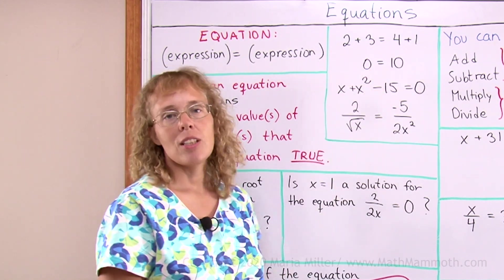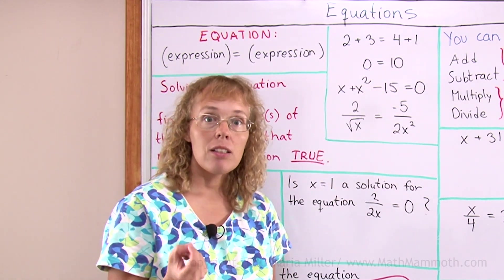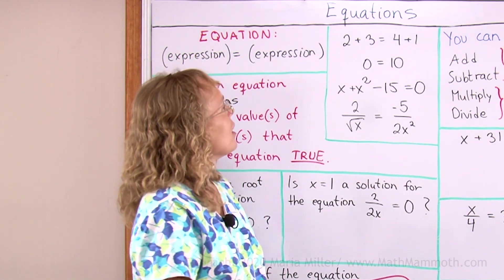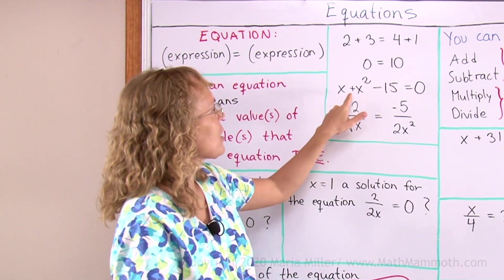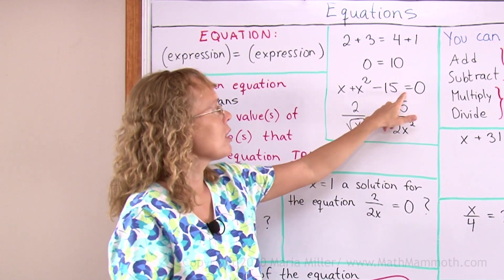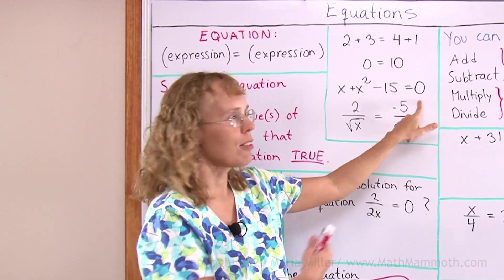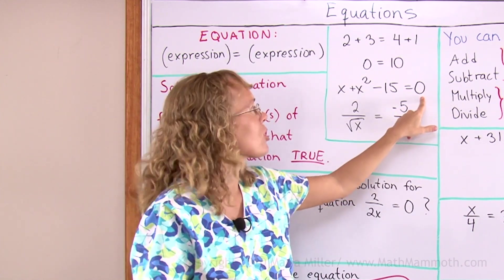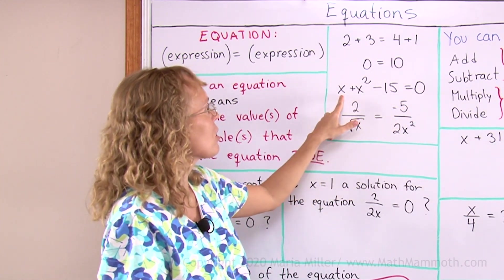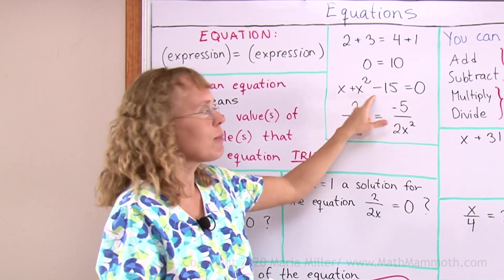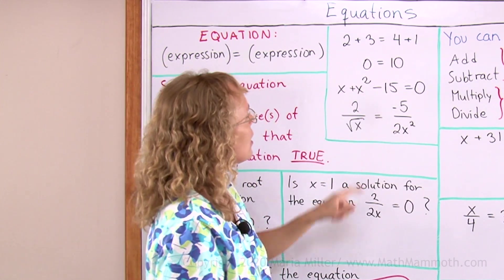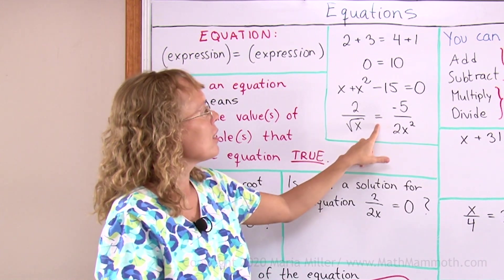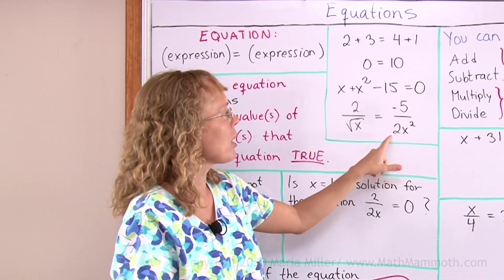Here's an equation, 0 equals 10. It is an equation, but it's a false equation. And here's an equation, x plus x squared minus 15 equals 0. On the right side, we have an expression because a single number is an expression. And this is an expression, there's letters and numbers and mathematical operations.